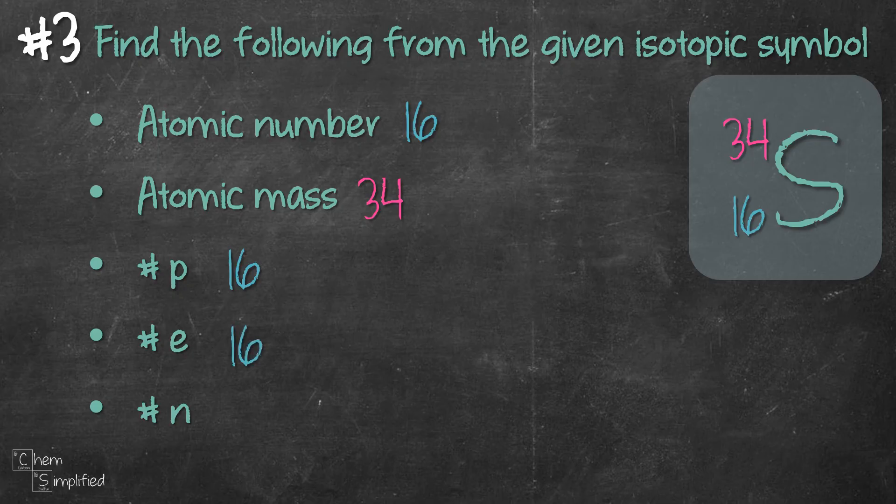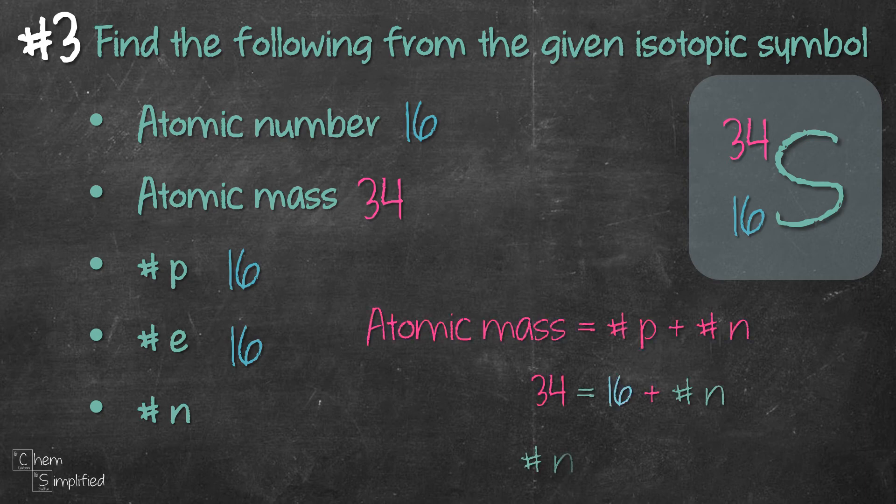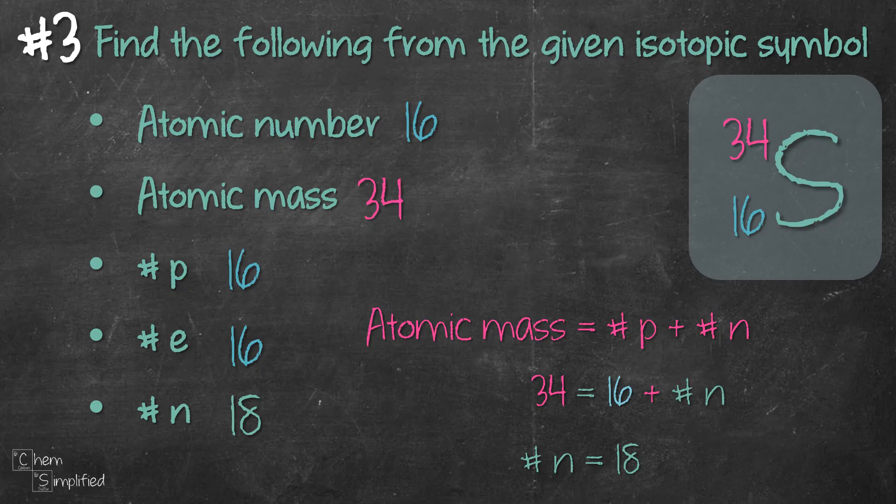Number of neutrons, remember that atomic mass is the number of proton plus number of neutron. Well, if you plug in the information, you can solve for number of neutron and that's 18.